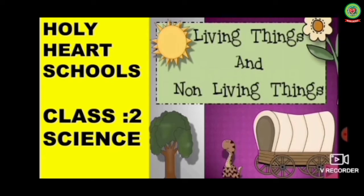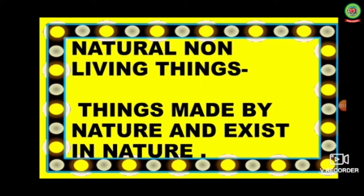Students, as you know this lesson is not given in your book, so we will do this through PPTs and videos. We will now start this topic with different types of non-living things. Number one is natural non-living things — things made by nature and that exist in nature.